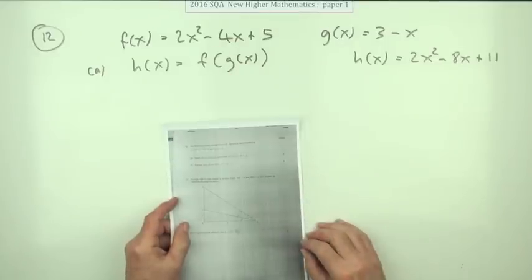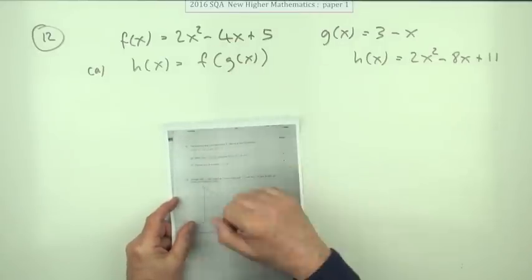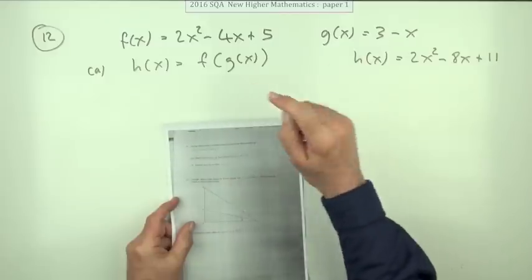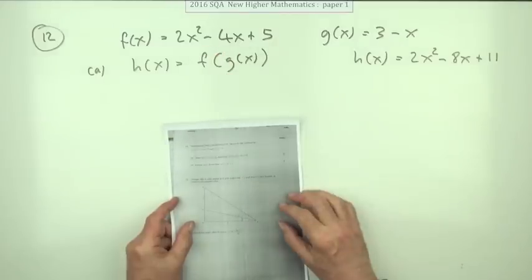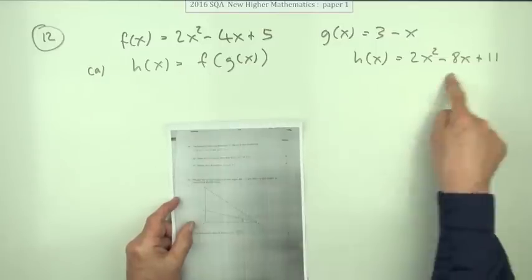Number 12 from the 2016 New Higher Maths Paper 1. Functions of functions—no fractions. We've got a linear expression and a quadratic expression. It says find this composition of functions, but it gives you the result you're aiming towards, obviously to make it easier to mark Part B.